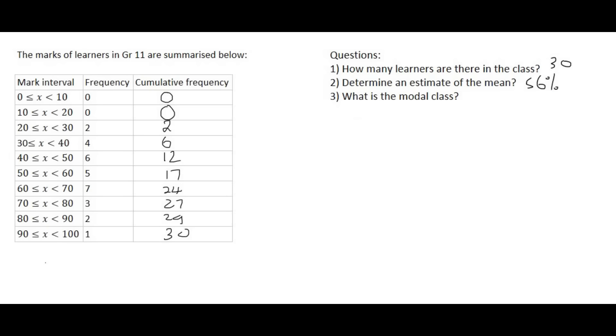And then the last question asks for the modal class. The modal class or the mode that stands for the most. So it's the class that got the most. So what we mean by classes is each of these are considered to be a class. So we can see down here that this interval the 60 to 70 that has the most people. It has seven people. And so the modal class is going to be x is bigger than or equal to 60 and smaller than 70.